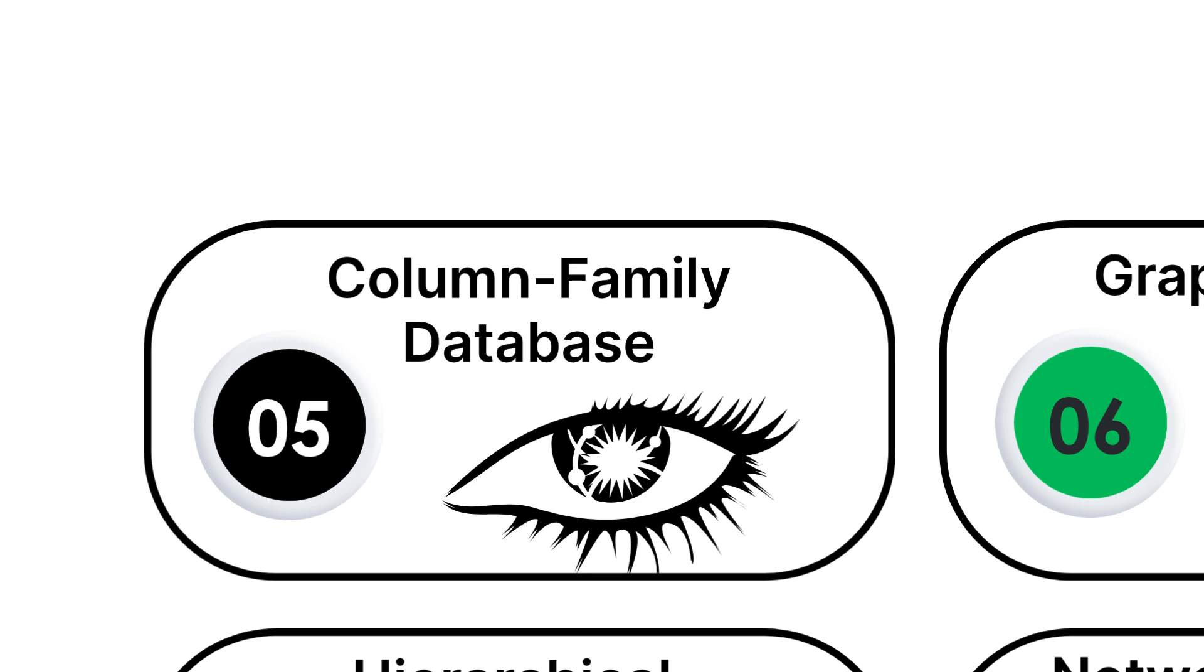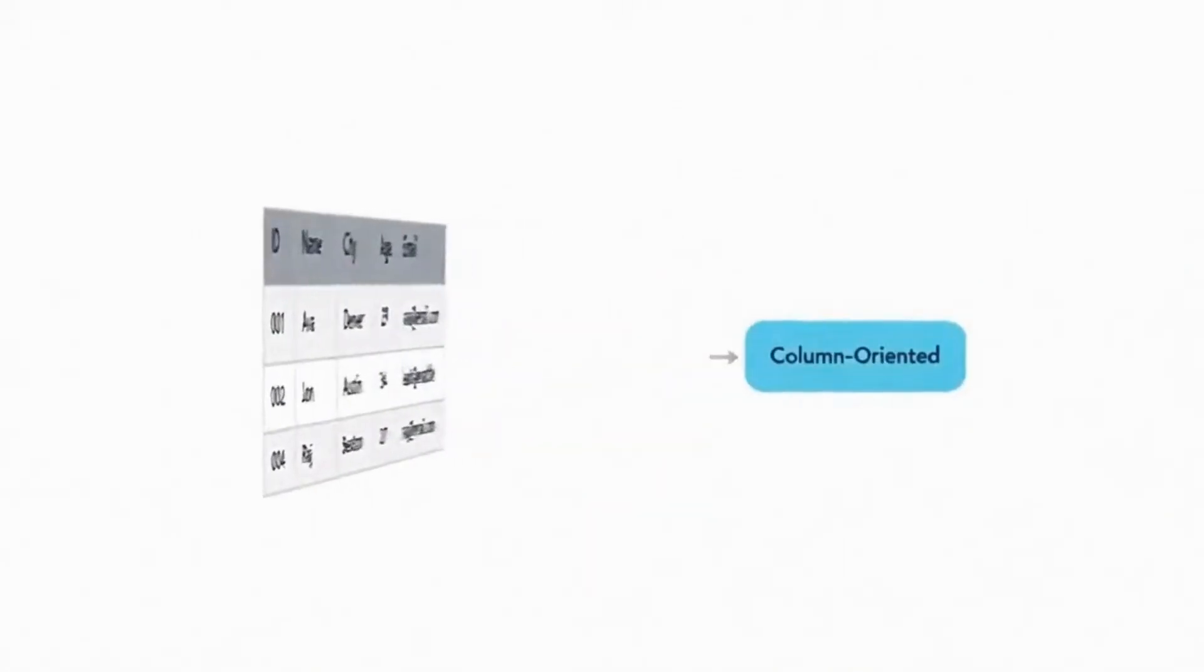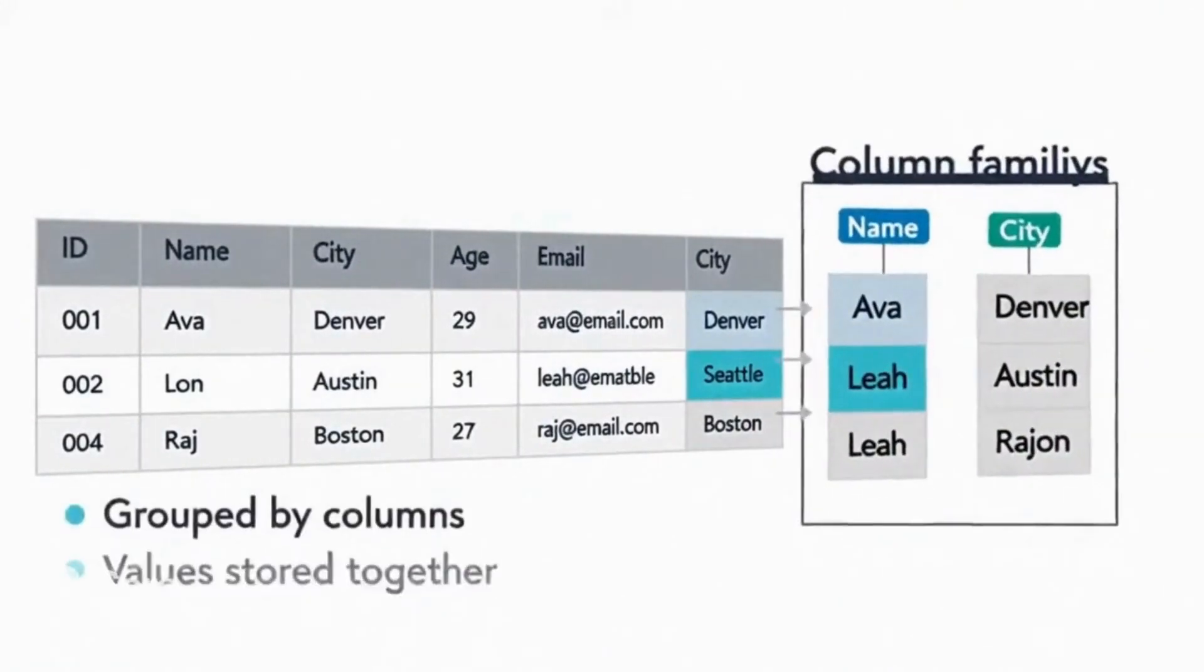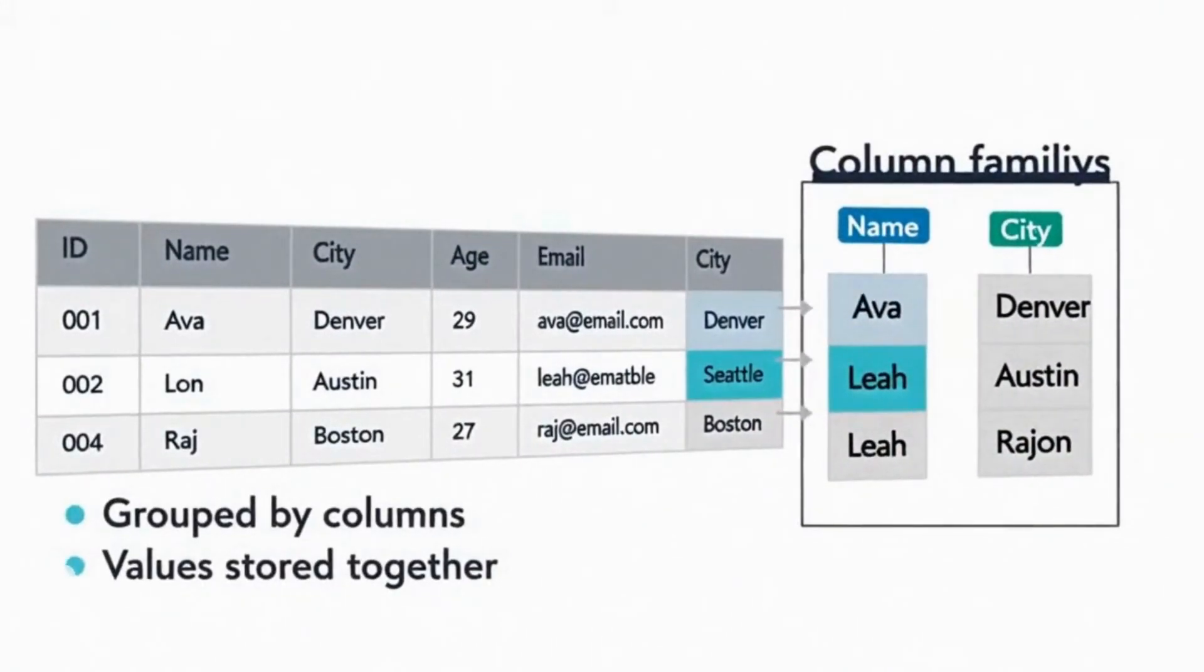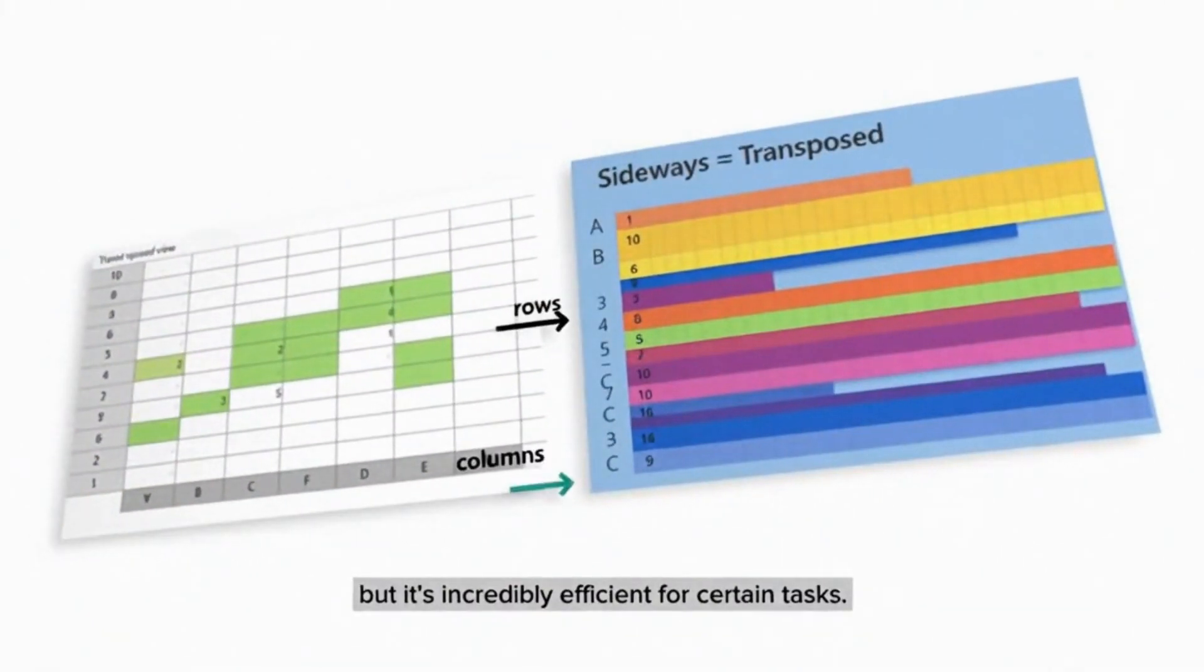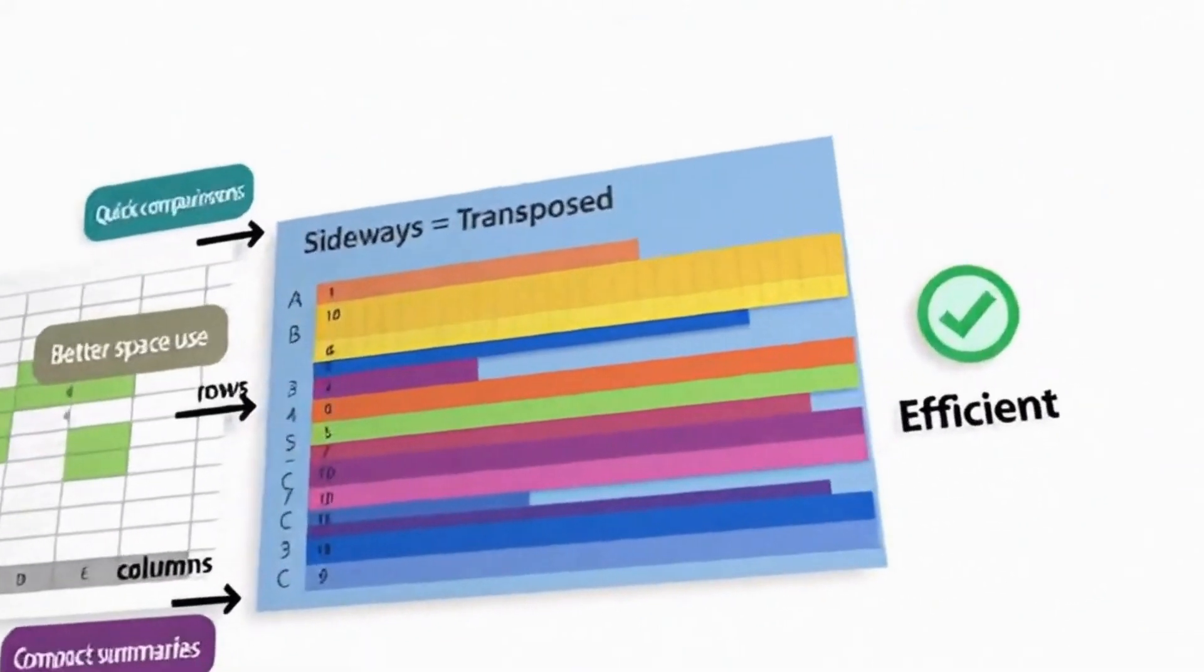Number five, Column Family Databases. Column Family Databases flip traditional databases on their head. Instead of storing data in rows, they organize it by columns. Imagine turning a spreadsheet sideways. This might sound confusing, but it's incredibly efficient for certain tasks.